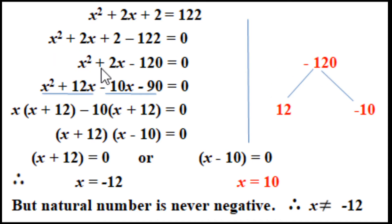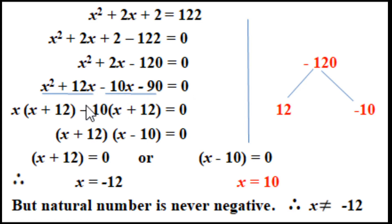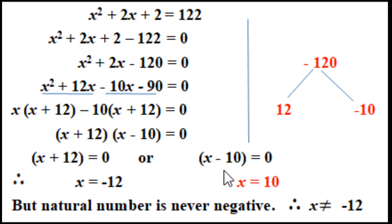We need two numbers whose product is minus 120 and whose sum is plus 2. The numbers are 12 and minus 10. Replacing 2x: x squared plus 12x minus 10x minus 120 equals 0. Taking common: x(x plus 12) minus 10(x plus 12) equals 0, giving (x plus 12)(x minus 10) equals 0. Therefore x equals minus 12 or x equals 10.